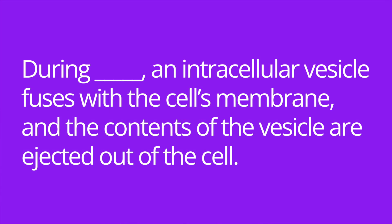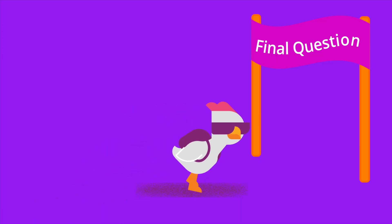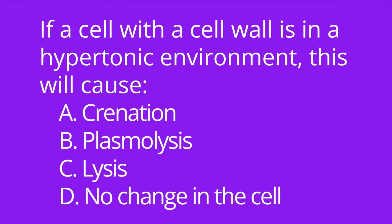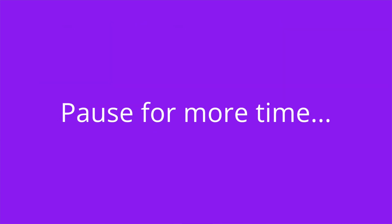Number four: during blank, an intracellular vesicle fuses with the cell's membrane and the contents of the vesicle are ejected out of the cell. The answer is exocytosis. Number five: if a cell with a cell wall is in a hypertonic environment, this will cause A) crenation, B) plasmolysis, C) lysis, or D) no change in the cell? The answer is B, plasmolysis.